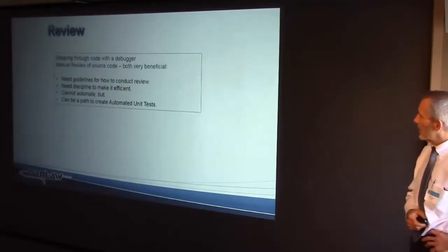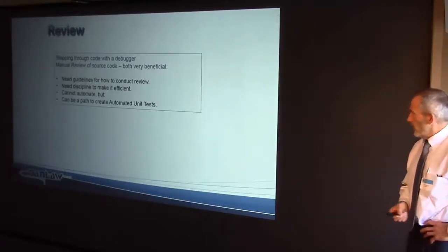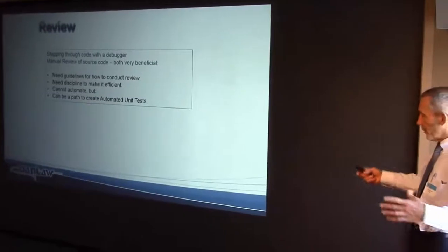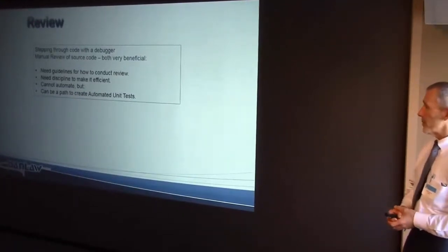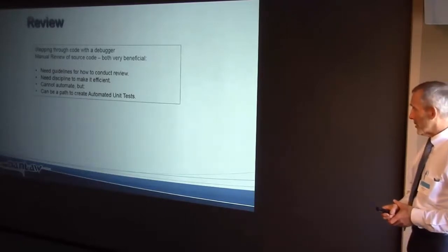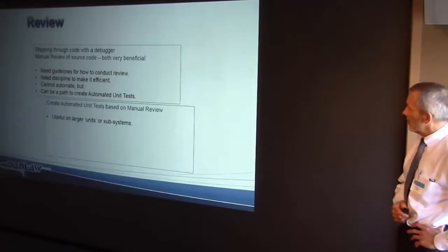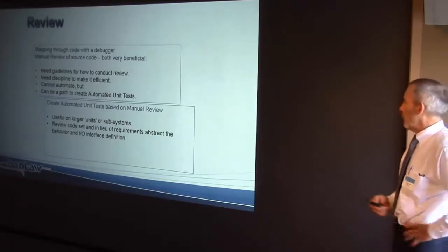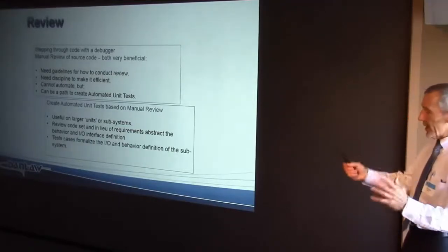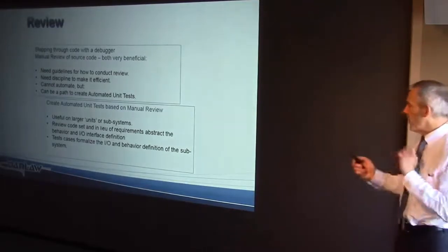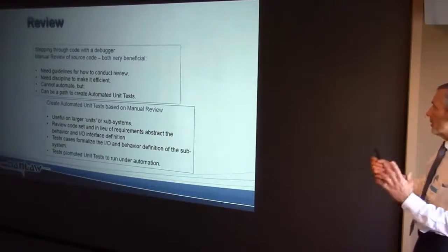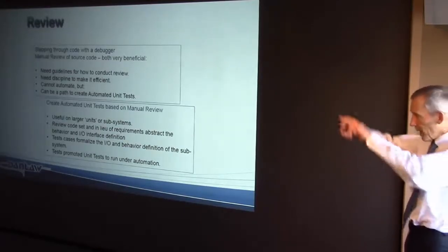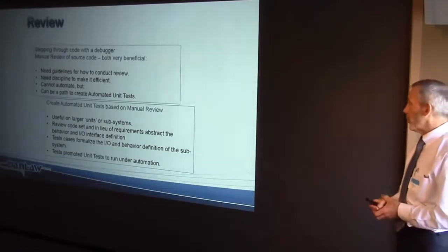Reviews are the things we do manually — they're very valuable, but you need discipline to get them right. Putting two or three valuable engineers in a room is expensive, so you need to plan it efficiently. One benefit I can see from the review path: if I pick a subset of functions that implement a subsystem, I can formalise that entity with test cases, test it from its IO boundary, and — even though there were no written requirements — I'm essentially capturing a formal behaviour definition. I can then promote that up to a unit test, and it becomes the requirements definition of that subsystem.